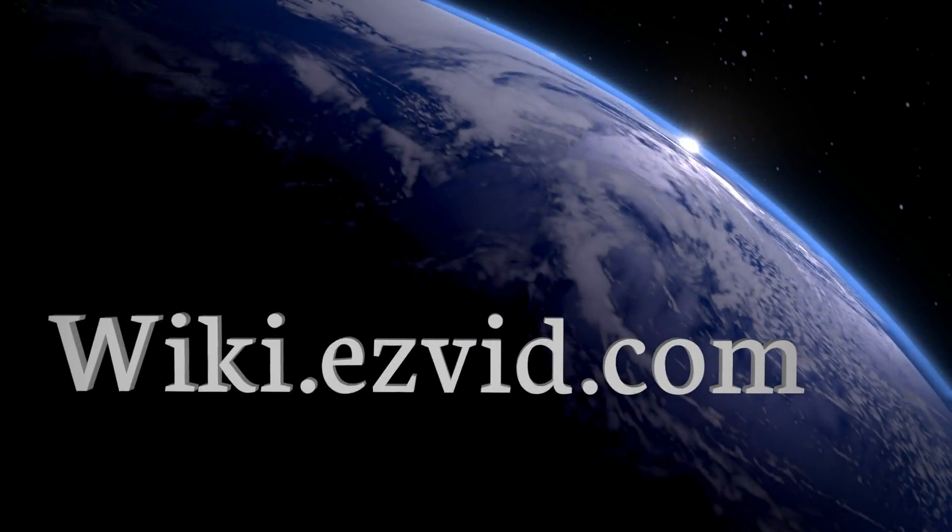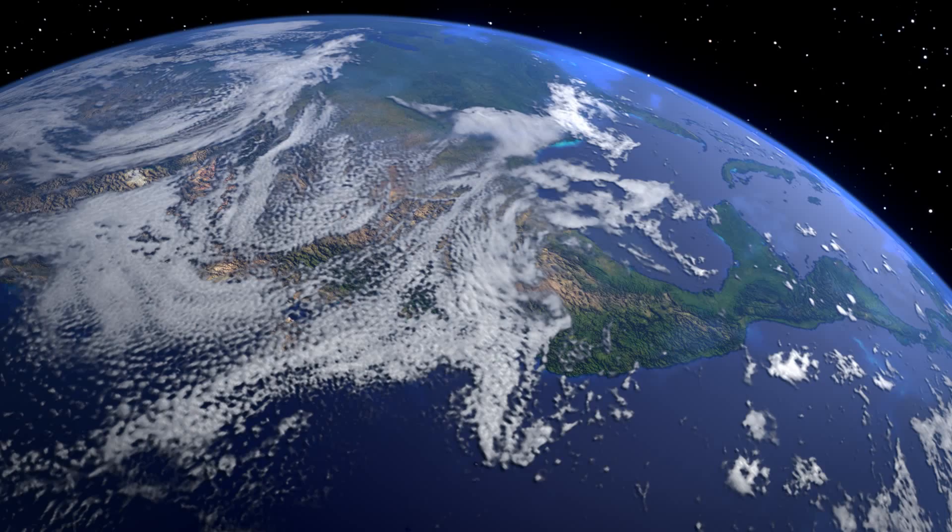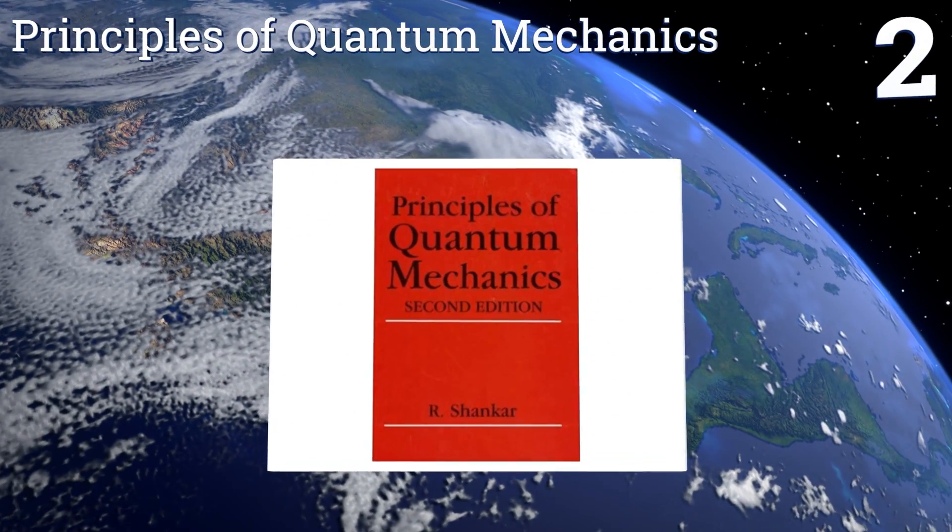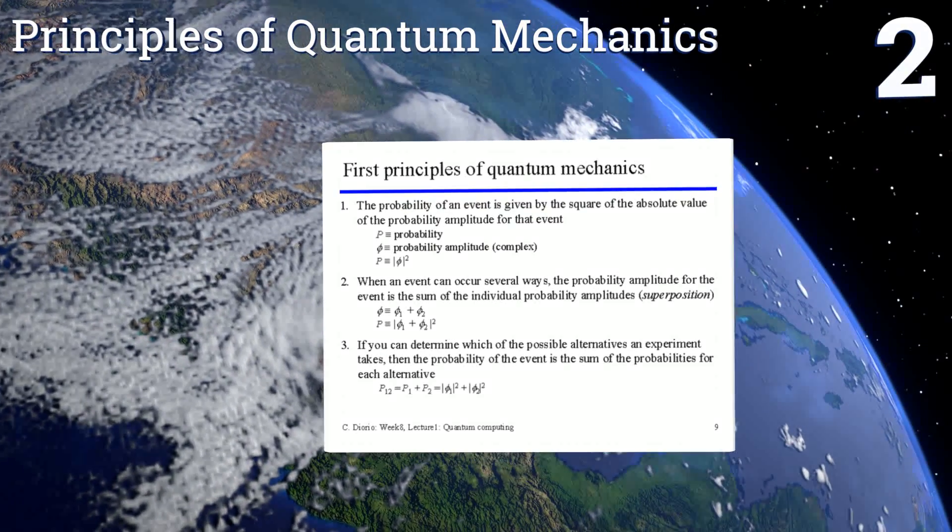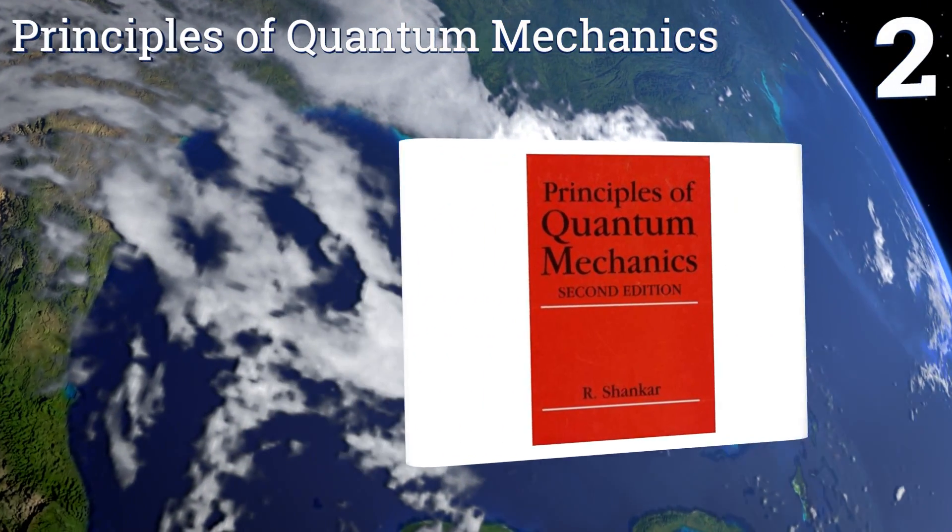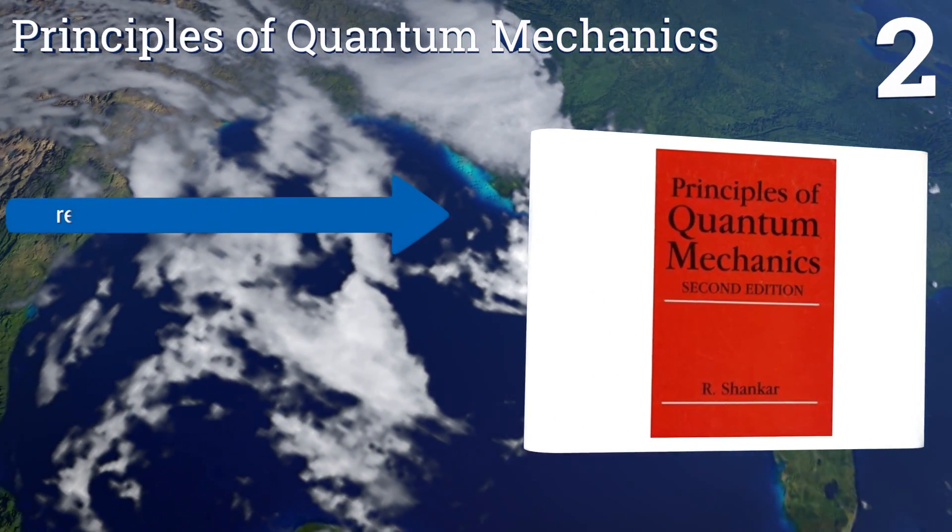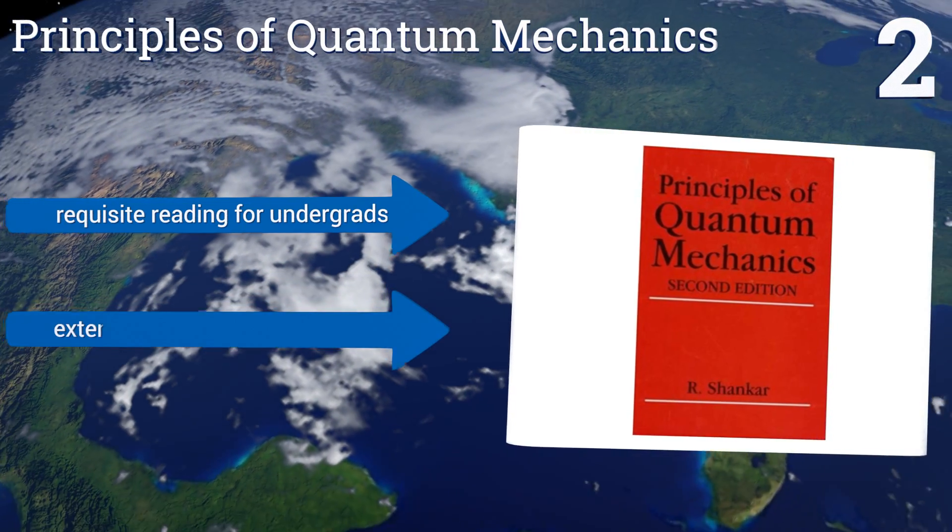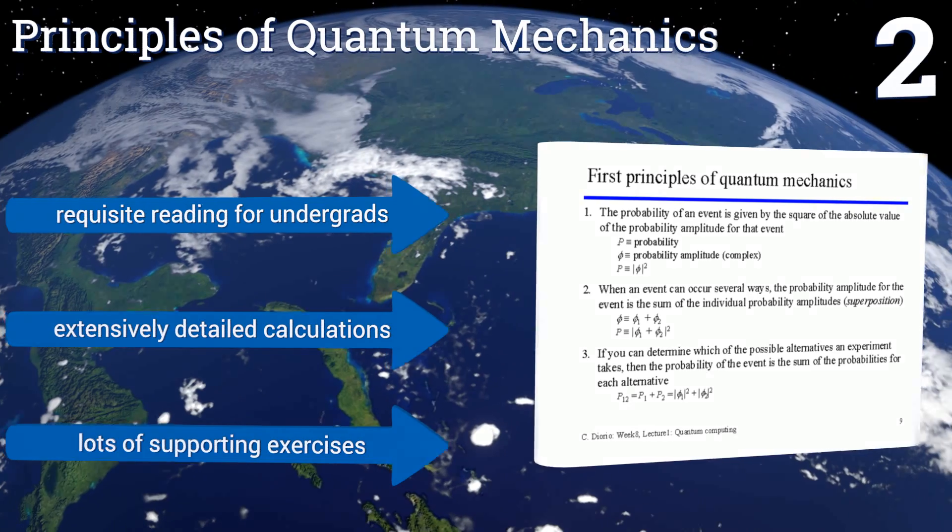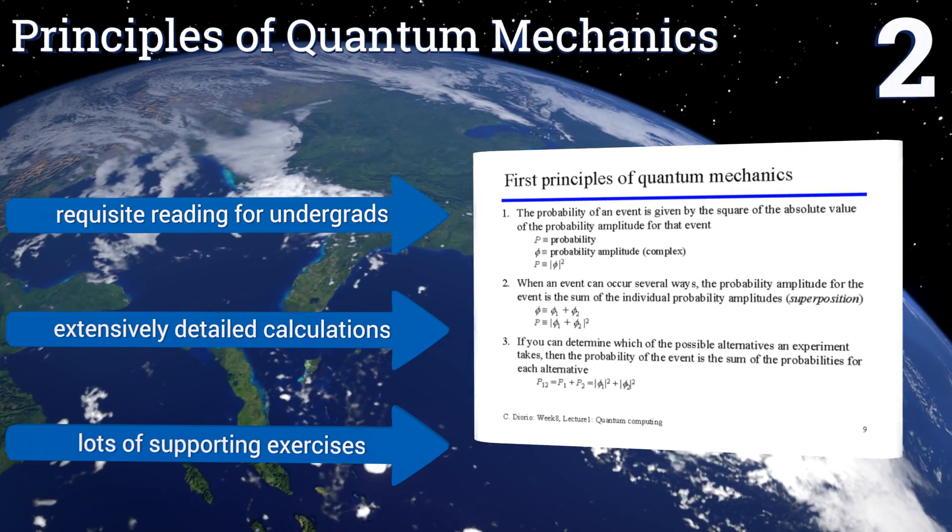At number two, Principles of Quantum Mechanics is a comprehensive text with more than 700 pages which the author uses to tackle the concepts of Dirac's bras and kets in a head-on manner. It has an informal style that makes difficult principles and theories easy to understand. It's requisite reading for undergrads and contains extensively detailed calculations and lots of supporting exercises.